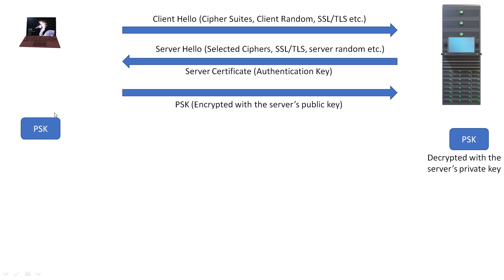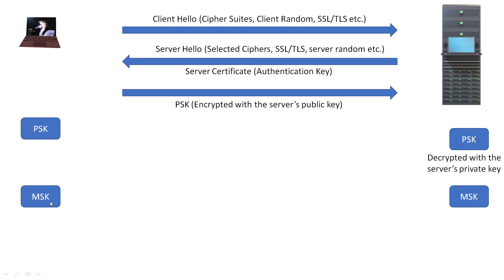Now the client has the pre-shared key, client random, and server random. The server also has the pre-shared key, client random, and server random. Using these three values — PSK, client random, and server random — both client and server will generate a master key.